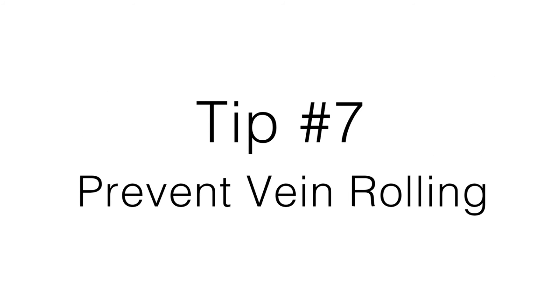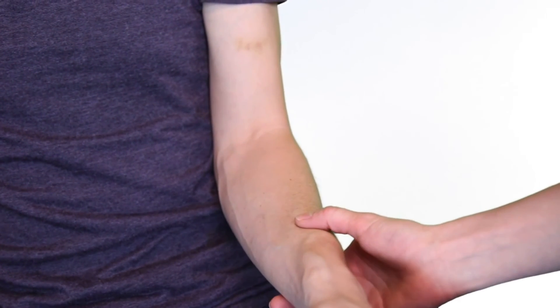And lastly, tip number seven, prevent vein rolling by holding traction on the vein and skin just below the venipuncture site using the thumb of your non-dominant hand.